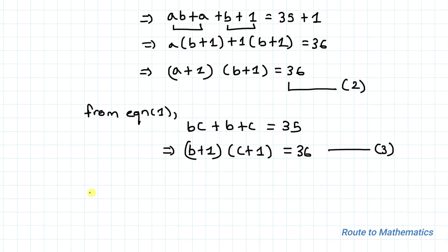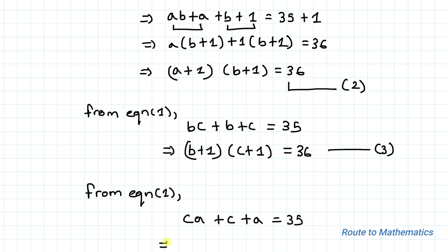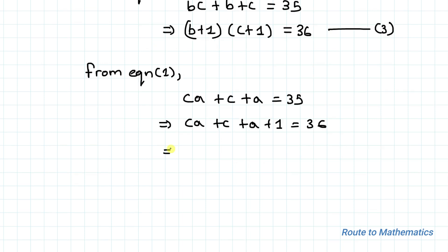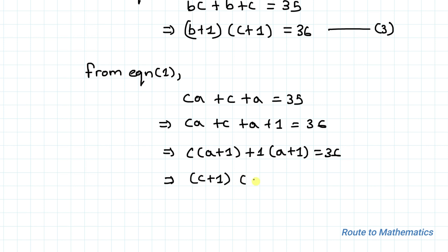Considering the third term from equation 1, we have CA plus C plus A equals 35. Similarly, adding 1 to both sides gives CA plus C plus A plus 1 equals 36. Taking C common and then 1 common, we get (C+1)(A+1) equals 36. Let's take it as equation 4.